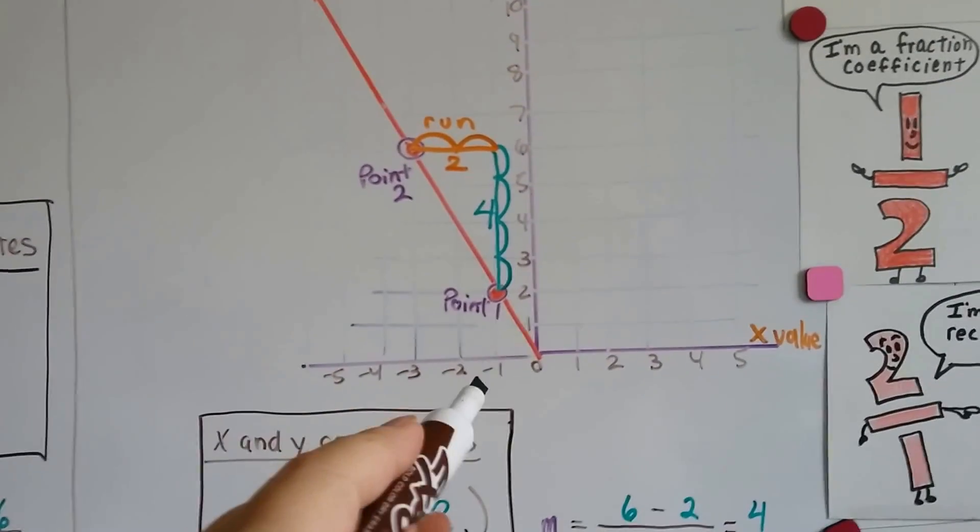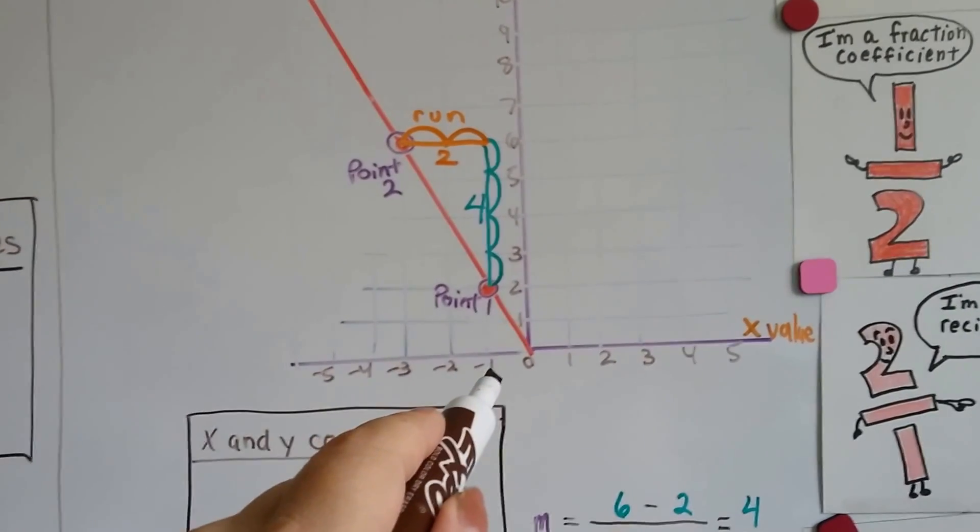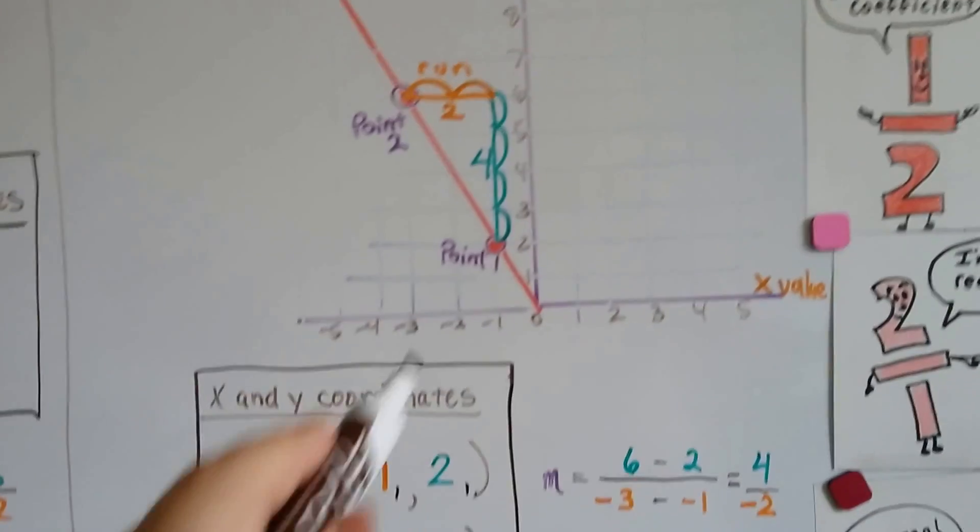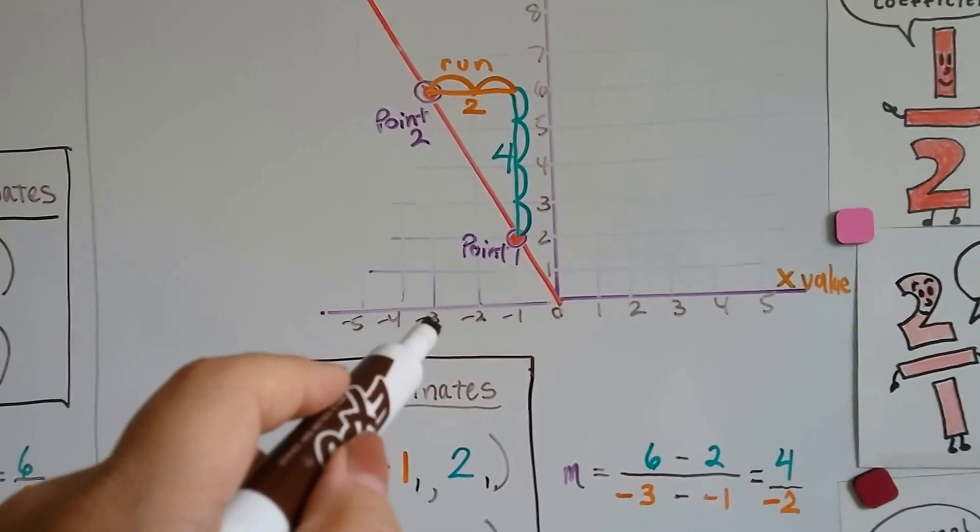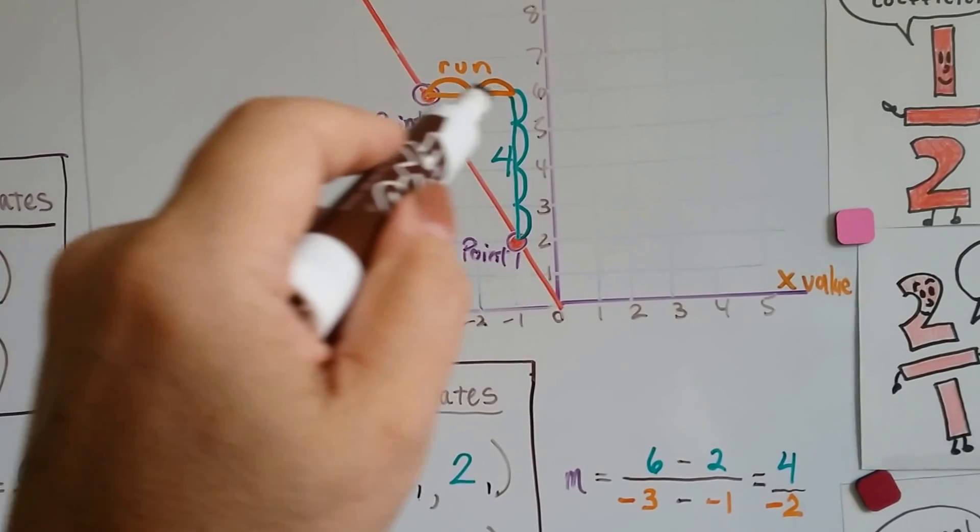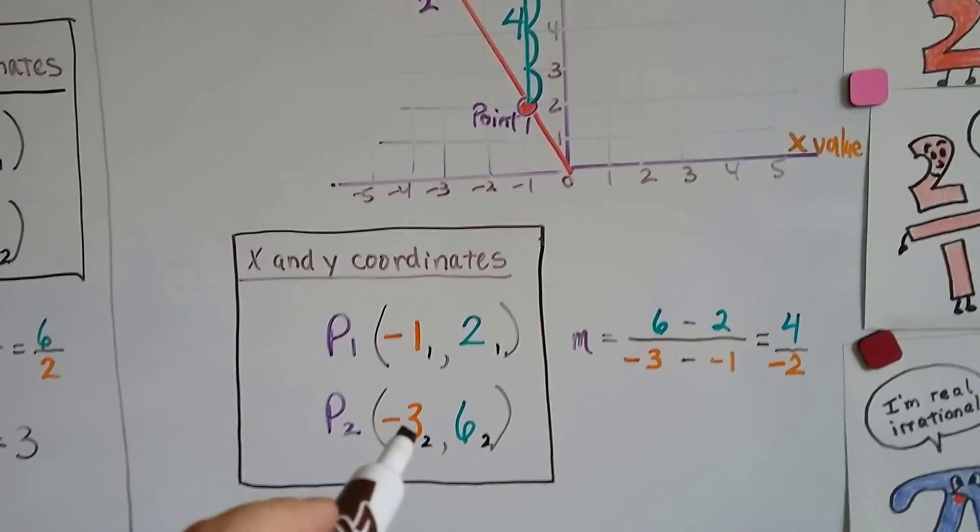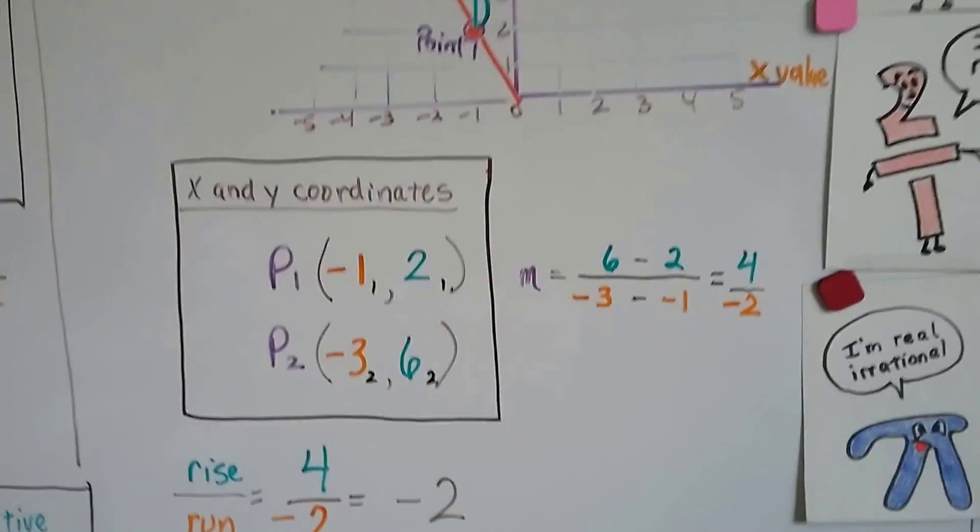Our first coordinate is negative 1 for x and 2 for y. Negative 1, 2. And for our second point, we've got a negative 3 and a 6 for y. Negative 3, 6.